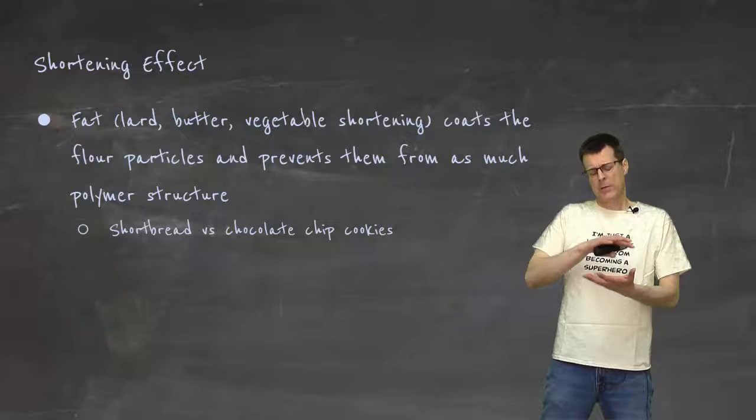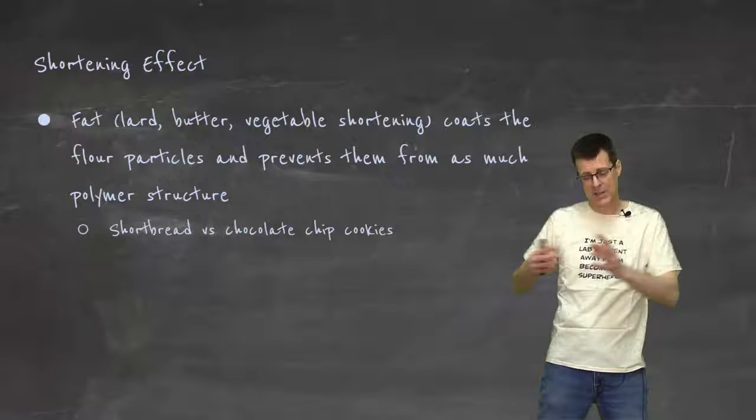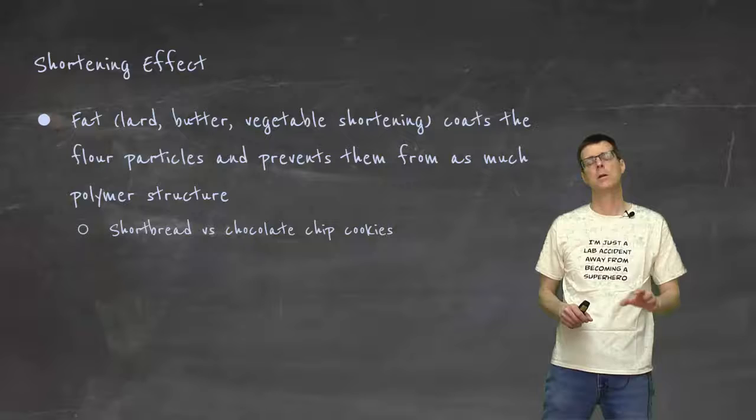If you compare a shortbread cookie, which is very crumbly and very sort of melt in your mouth with a chocolate chip cookie, which has a lot more structure, that's an example of what the shortening effect does. Yes, in both cases you've mixed butter in with the whole mixture, but with the chocolate chip cookie, you don't really work it through all that carefully. Whereas with a shortbread, you really spend a lot of time kneading that butter into the flour mixture so that you coat all the flour really, really well.